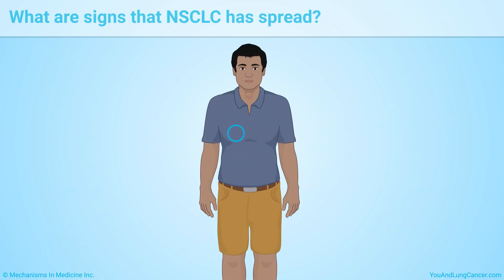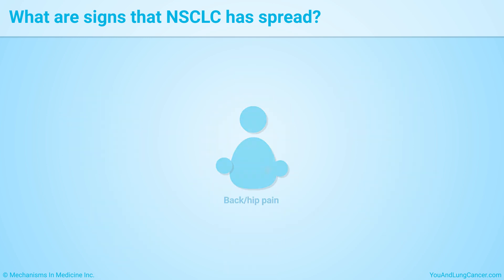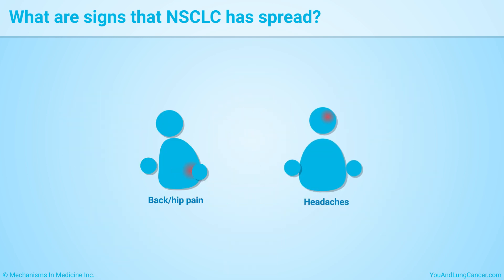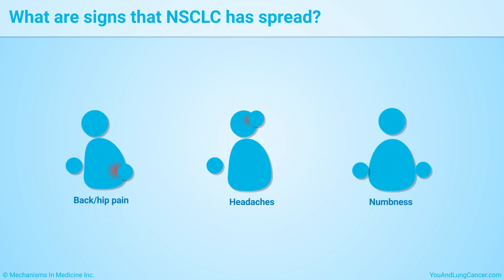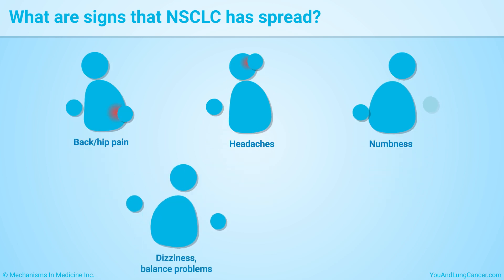Symptoms that Non-Small Cell Lung Cancer has spread to other organs include pain in the back or hips if it's in those bones, headaches, weak or numb arm or leg, dizziness, balance problems, and seizures if it's in the brain or spinal cord.